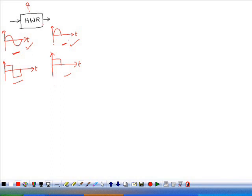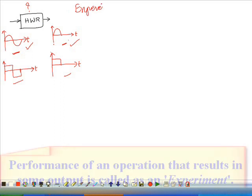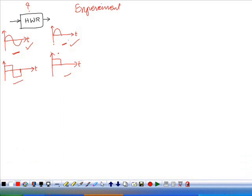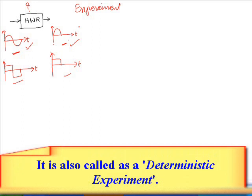Here we performed something. We applied some input to the outdoor rectifier and we obtained some output at the output of the rectifier. Performing some operation is called experimentation. We performed one experiment in which the output can be predicted before it actually happens. That type of experiment is called a non-random experiment — there is no randomness in the occurrence of the output of this particular experiment.